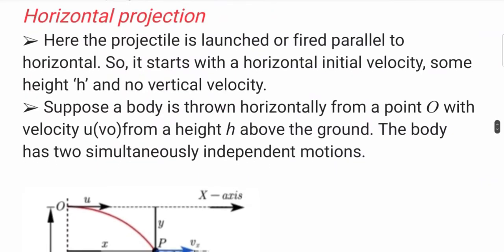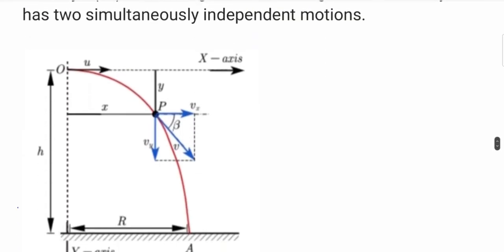For horizontal projection, you can see that we project an object or launch an object parallel to the horizontal reference — the horizontal ground. If the object is thrown from a certain height, motion takes place in both directions: along the X direction and along the Y direction.